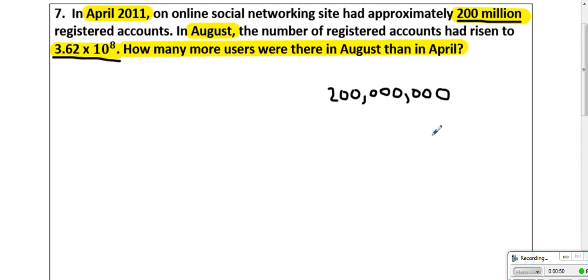In August, the number of registered accounts had risen to 3.62 times 10 to the 8th. How many more users were there in August than in April? First off, this is the amount for August, so I'm going to put that down, this is August right here, times 10 to the 8th.